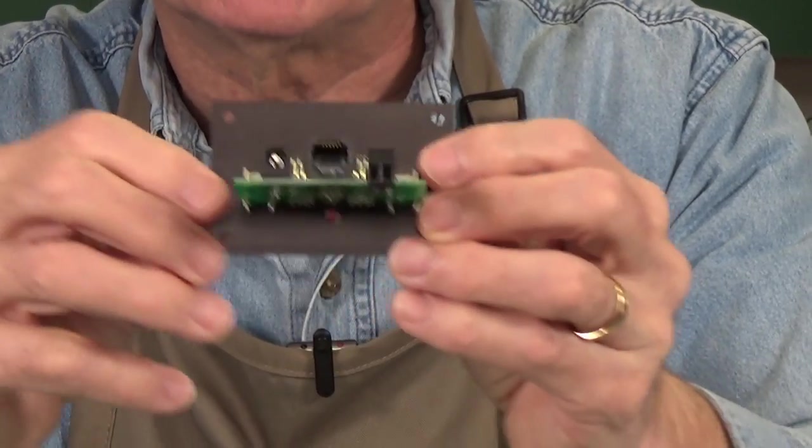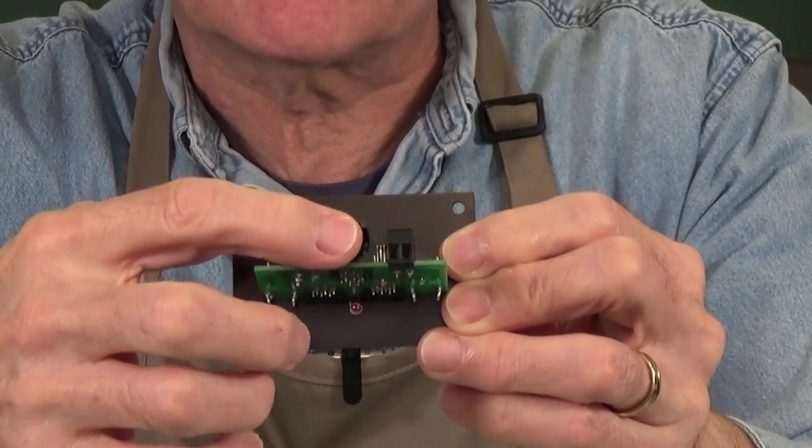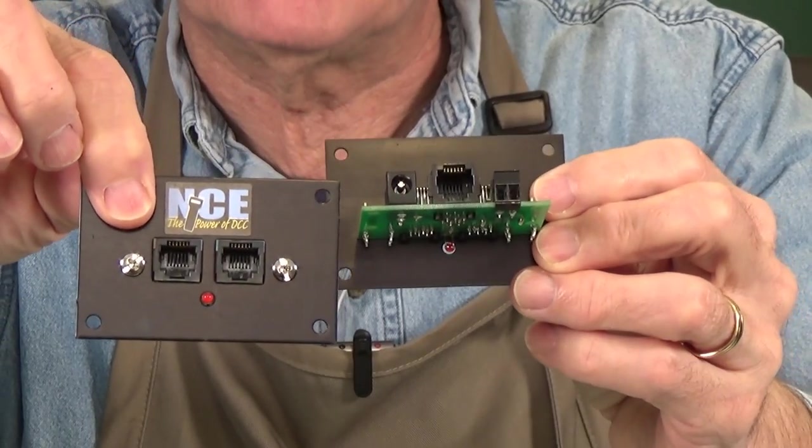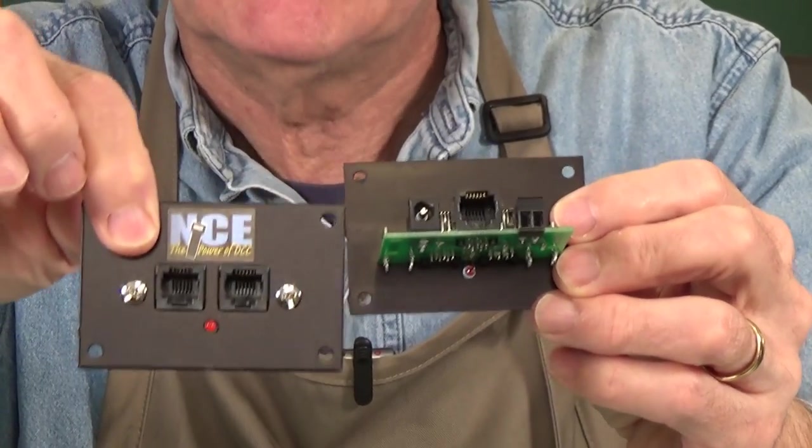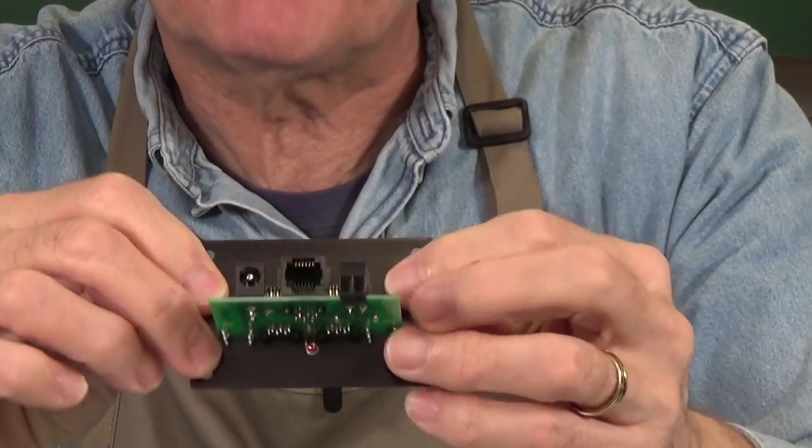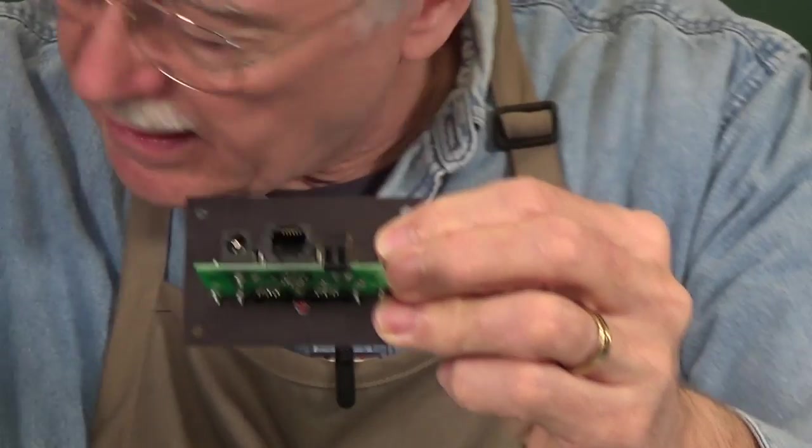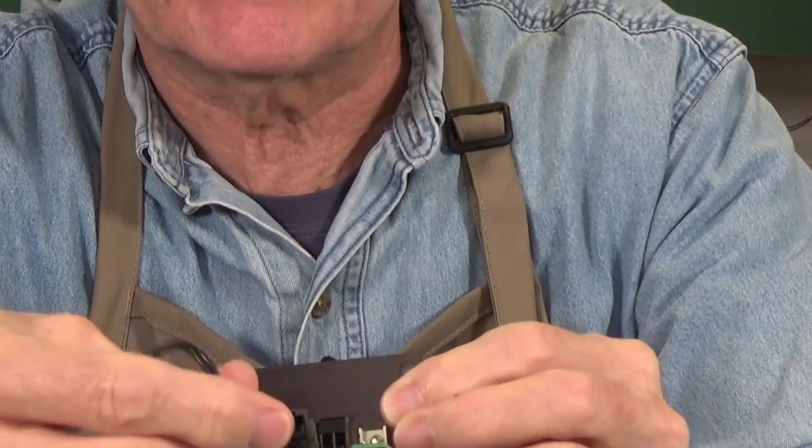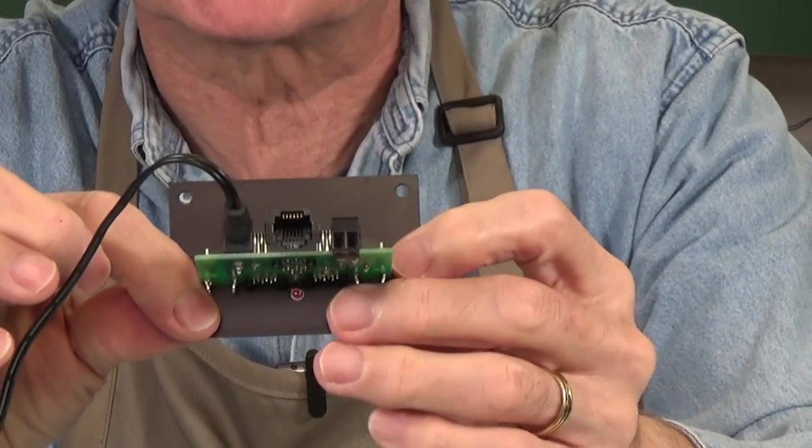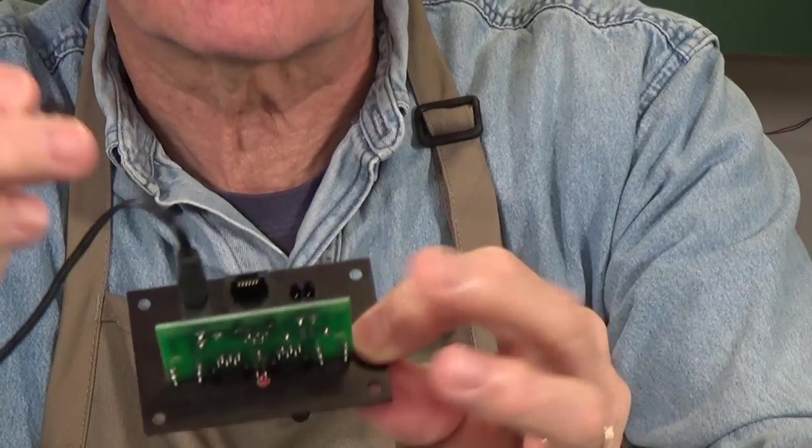Also on the back, you can see, we have another socket back here. And that's your expansion socket to go to a second panel here that would be located elsewhere on your layout. And you can actually daisy chain several of these. Now, another thing back here is this socket here. And this barrel plug socket is where your power supply gets plugged into. So that provides the power to operate your system.